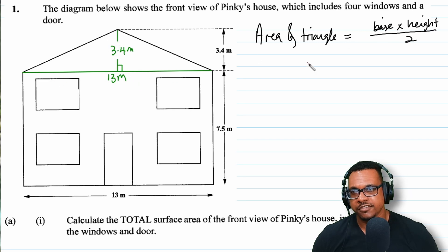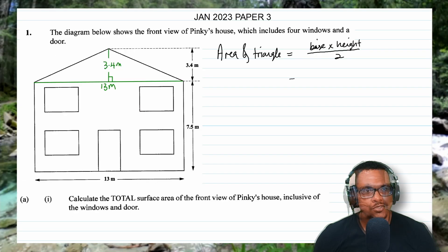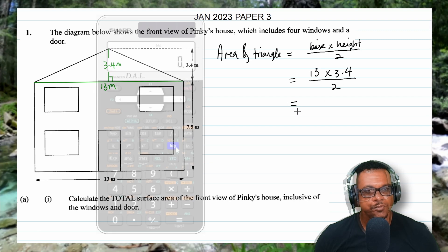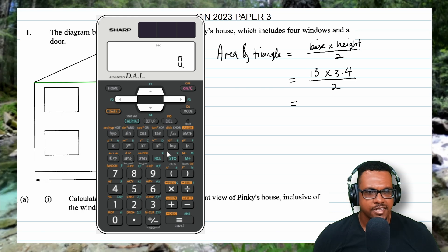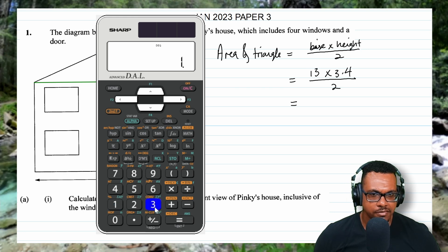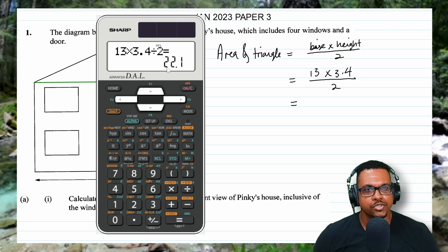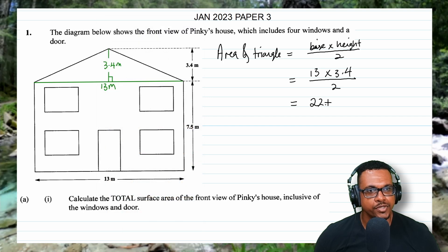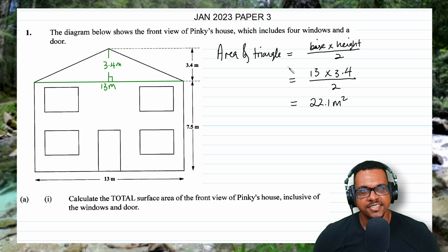Now we have all the information we need to calculate the area of the triangle. The base is 30 and the height is 3.4, divided by 2. Putting 30 multiplied by 3.4 divided by 2 into the calculator gives 22.1, so the area of the triangle is 22.1 meters squared.